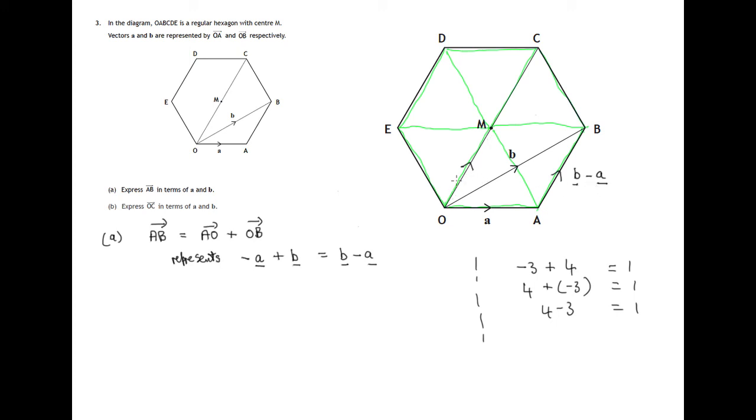And if we know that AB represents B minus A, then O to M will represent exactly the same vector. These lines that represent vectors, it doesn't matter where they start, so long as the direction is the same, and they're parallel in other words, so long as that direction is the same and the distance travelled is the same, they represent the same vector. So this line here, O to M, will represent B minus A.